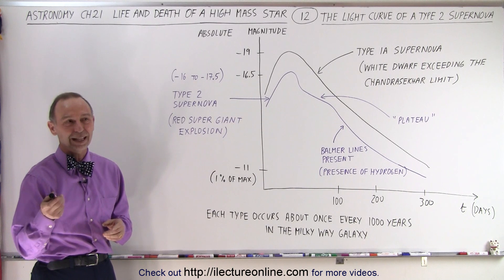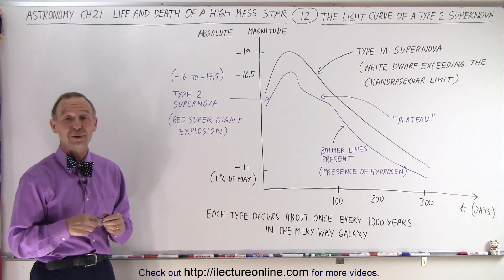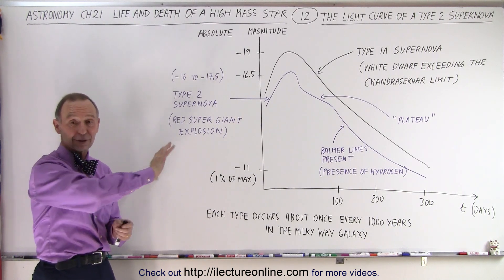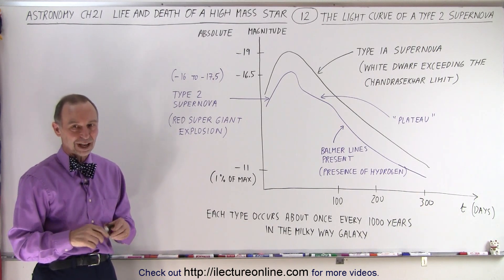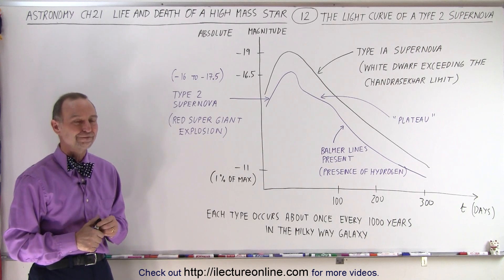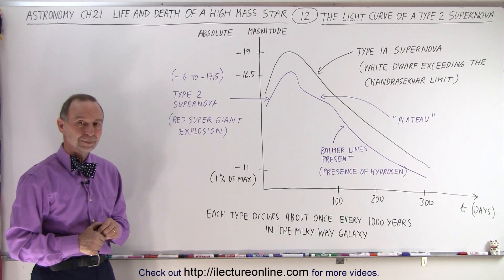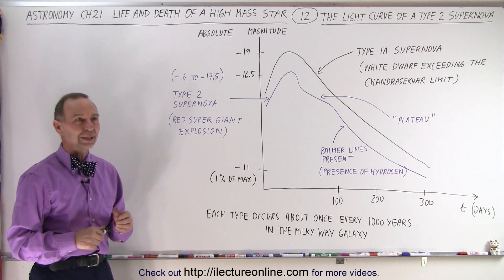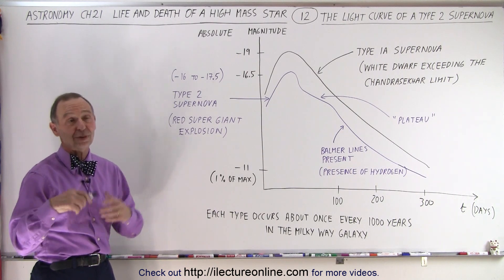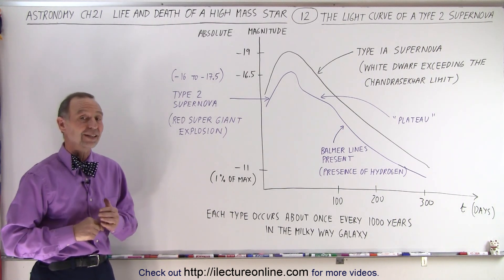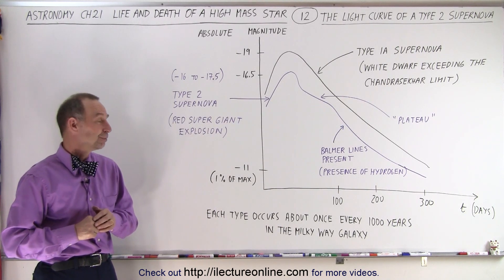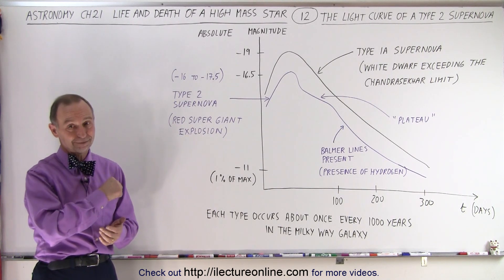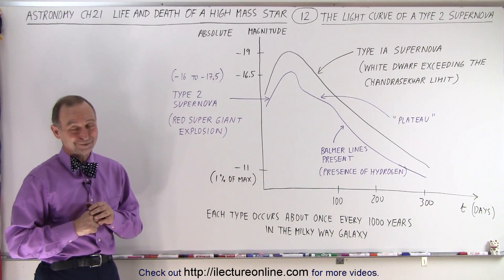And then we had the one that happened in 1054 AD a thousand years ago that we have hieroglyphics in the American desert. Indians painted it and the Chinese astronomers actually have records of seeing it. Did they call it something? I don't know what they call it but that wasn't even in yeah that was in our own galaxy that was about 6000 light years away so that was bright you could see it during the daytime. All right. And you weren't around then either? I wasn't around then. I'm not that old.